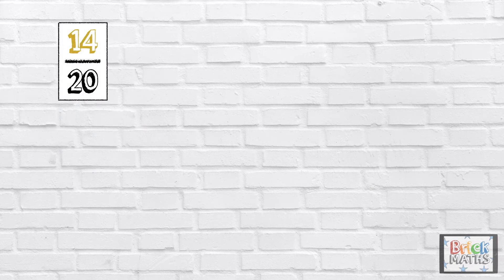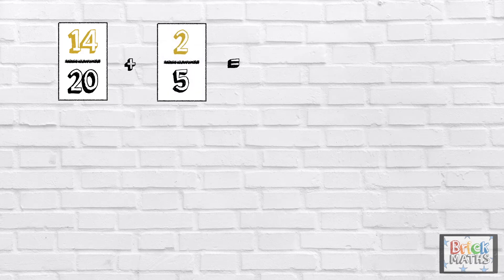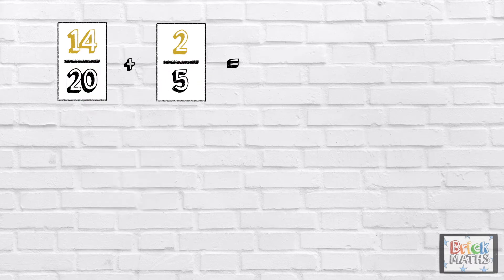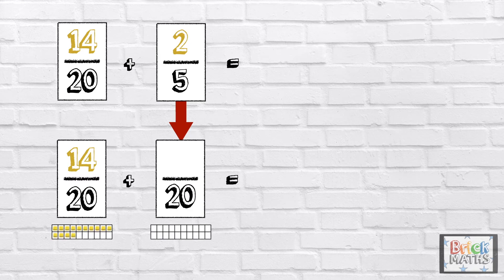Here is another calculation: 14 twentieths add 2 fifths. First, we need to find a common denominator. 20 is the common denominator because it can be divided by 20 and it can be divided by 5.